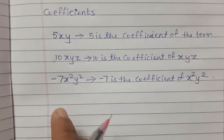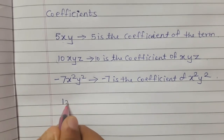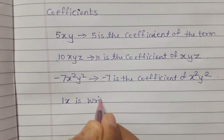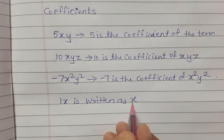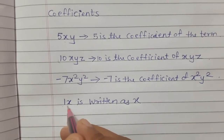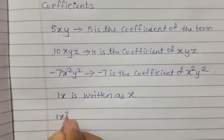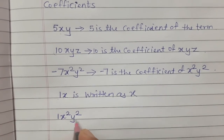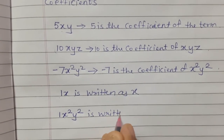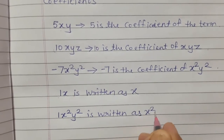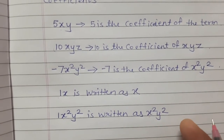When the coefficient of a term is plus 1, it is usually omitted. For example, 1x is written simply as x, and 1 times x squared y squared is written as x squared y squared. The coefficient is still 1.